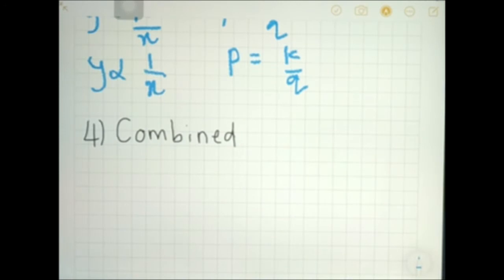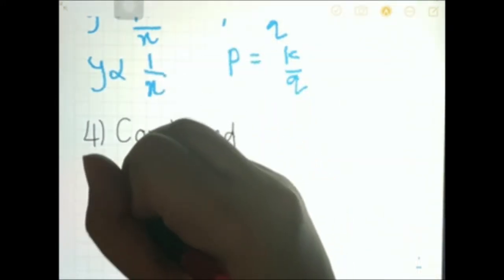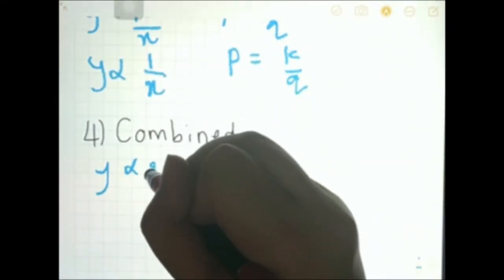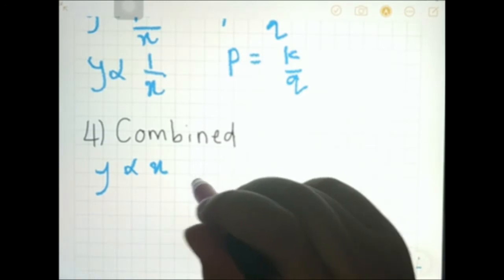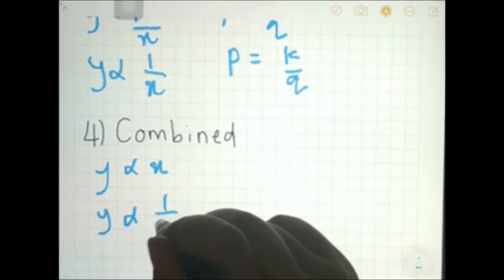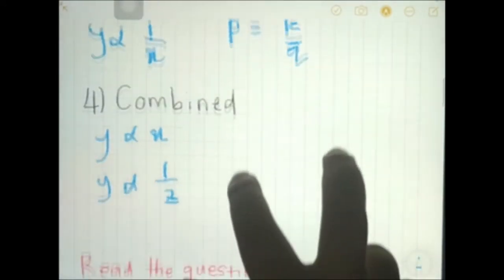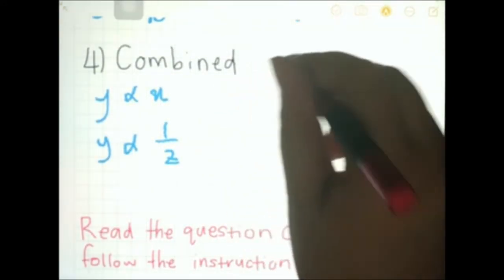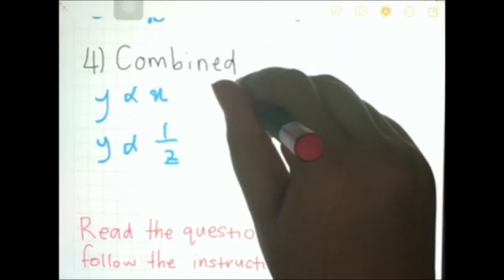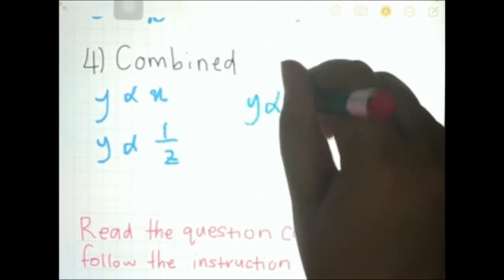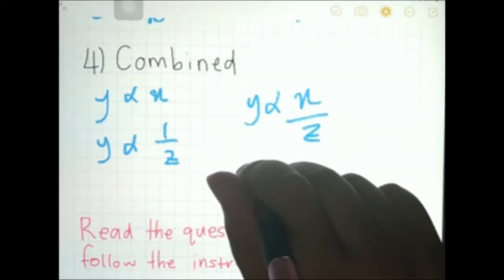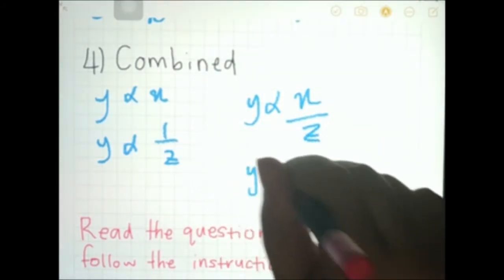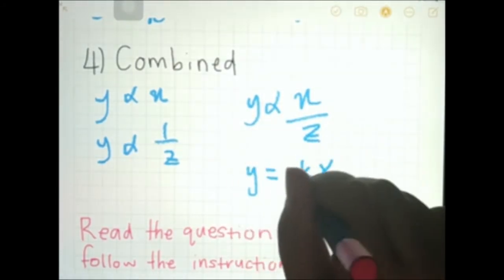Lastly, combined variation is when we combine all the variations into one. For example, what if we say y varies directly with x but inversely with z? In equation form, we write it as y equals kx over z.